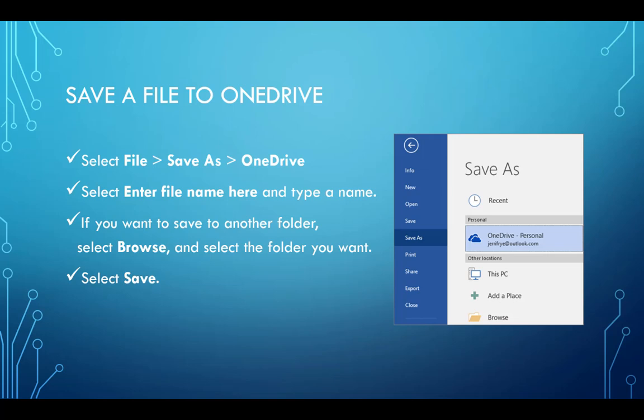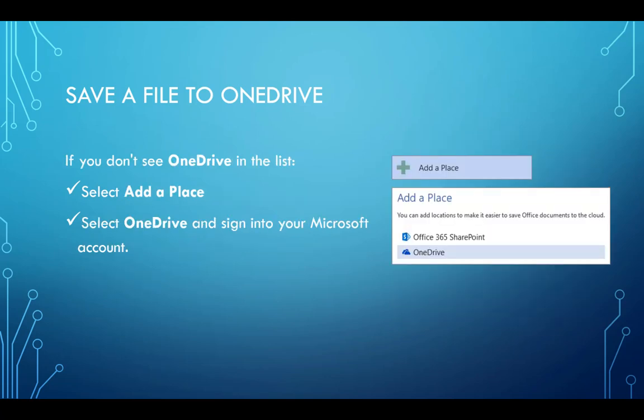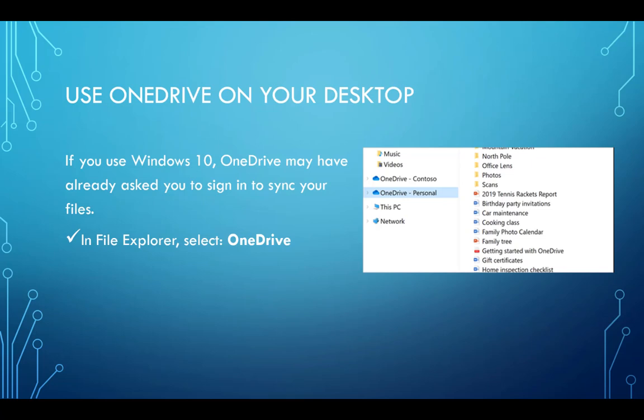The next time you open the Office app, you'll see your saved file in the recent list. If you don't see OneDrive in your list at all, select Add a Place, then select OneDrive and sign in to your Microsoft account using your Sierra College email and the same password you use for MySierra. If you use Windows 10, OneDrive may have already asked you to sign in to sync your files. In the File Explorer, select OneDrive. You can also click on the folder icon in your taskbar or search File Explorer in your start menu.